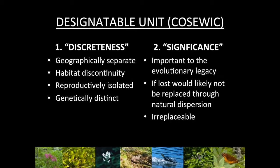The designatable unit concept looks at two things: discreteness and significance. Significance doesn't get looked at until discreteness is established, and discreteness by itself is not enough to make a unit. When we talk about being discrete, we mean genetic distinctiveness known through neutral genetic markers or inherited traits, natural range disjunctions, and occupation of different ecological regions that are relevant to that species. But it's not enough to be discrete — one must be significant as well.